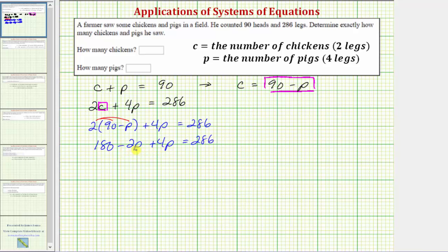Combining like terms, negative 2p plus 4p is 2p. So we have 180 plus 2p equals 286.